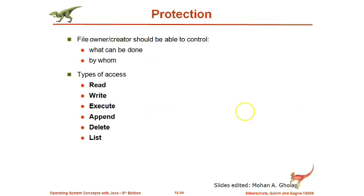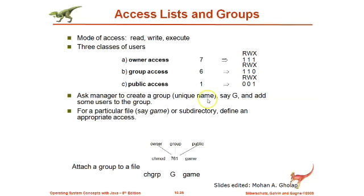Next we will see how to provide protection. Protection means access rights. The file owner or creator should be able to control what can be done with a file and by whom. The different types of access permissions are: read, write, execute, and append. The mode of access is usually one of these three: read, write, or execute.